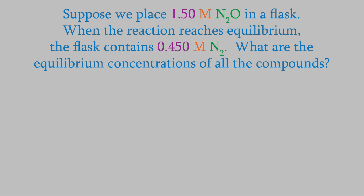A RICE table has four rows, R, I, C, and E. In the top row, we write the balanced reaction. In our example, our reaction is this.